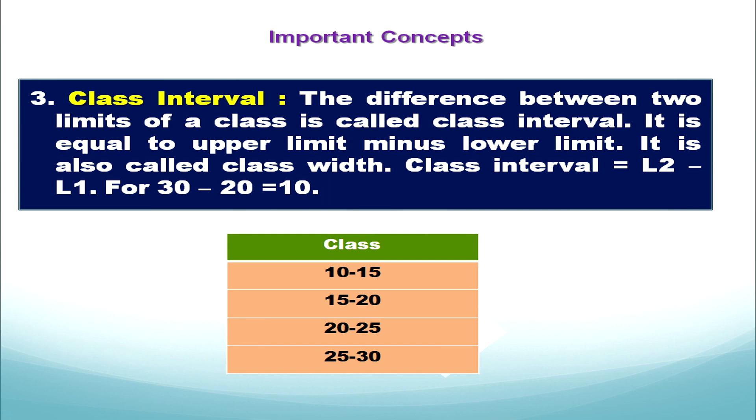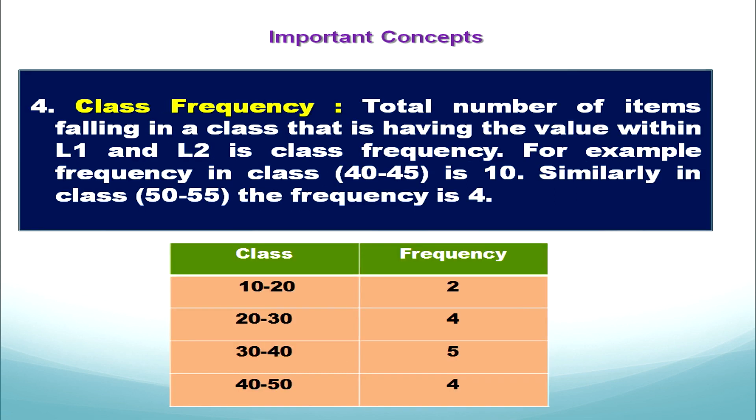The next concept is class frequency. Every class has a frequency. It shows the total number of items falling in a class — that is, having a value within the lower limit and upper limit, as we can see for each class where the frequencies are given.